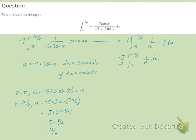The integral of 1 over u is the natural log of the absolute value of u. So this will be negative 7 thirds times the natural log of u, and we'll evaluate that from negative 13 halves to negative 5.